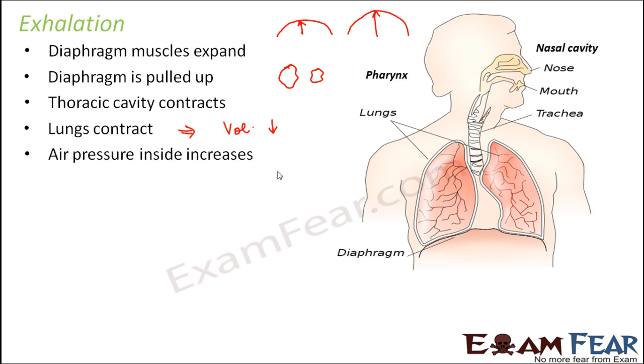The volume inside the lungs will decrease. We know that volume and pressure are inversely proportional, so if volume decreases, pressure will increase. When pressure inside the lungs increases, air tends to flow from region of higher pressure to region of lower pressure, therefore air starts flowing from the lungs to outside. This happens during exhalation.